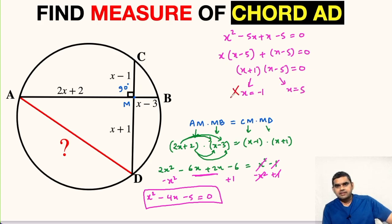We will reject this value because if X is negative 1, then this length will be negative 2 and this length will be 0. So we have to reject this value. So here we get X equal to 5.